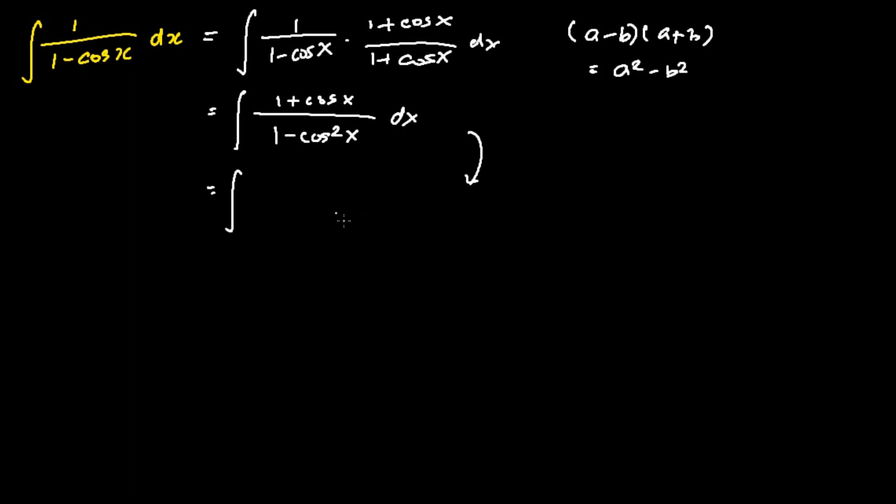we are going to apply the trigonometry identity, the Pythagorean theorem that sine square x equals 1 minus cosine square x. Hence, we will substitute in the denominator 1 minus cosine square x as sine square x.